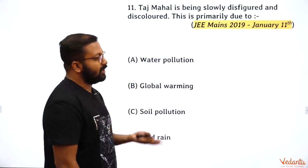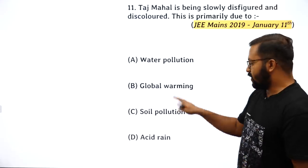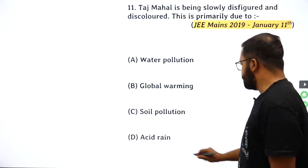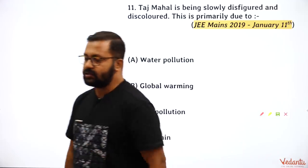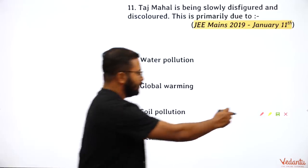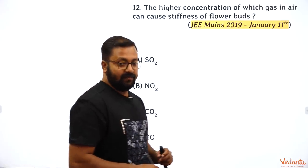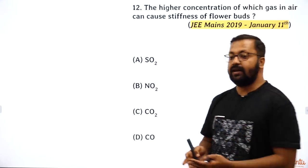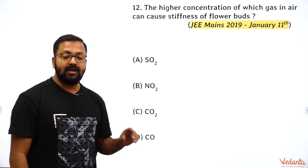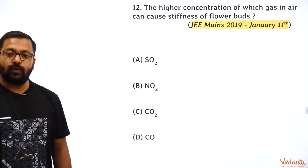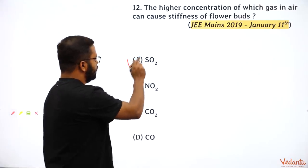The Taj Mahal has been slowly disfigured and discolored — this is primarily due to effluents from the Mathura oil refinery causing acid rain. The white marble has become slightly yellowish, so the answer is acid rain. Higher concentration of which gas causes stiffness of flower buds? The answer is sulfur dioxide — SO₂ causes stiffness of flower buds.